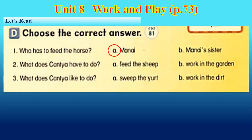Continue, number two. What does Katja have to do? Feed the sheep or work in the garden? So the answer is letter B.